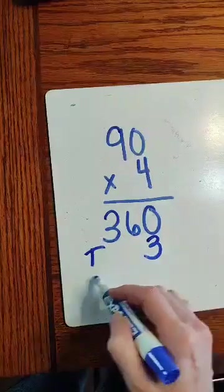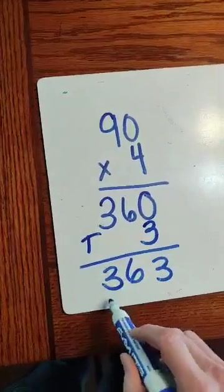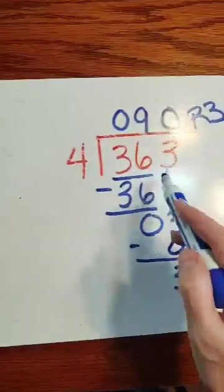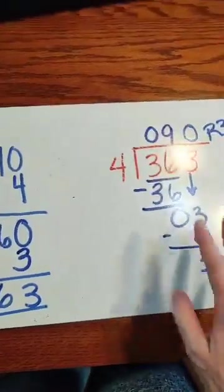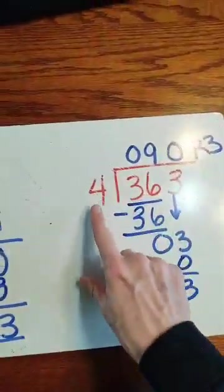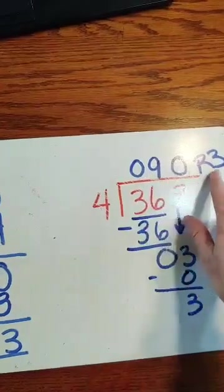So if I add that 3 remainder, I get 363. Is that my dividend? Yes, it is. 363. So if you need to check to see if you did it right, we can take the divisor times the answer and then add the remainder.